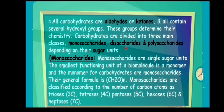Carbohydrates are divided into three main classes: monosaccharides, disaccharides, and polysaccharides. The smallest functioning unit of a biomolecule is a monomer, and the monomer for carbohydrates is a monosaccharide.